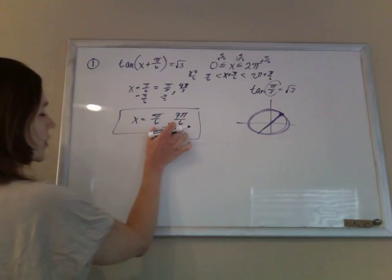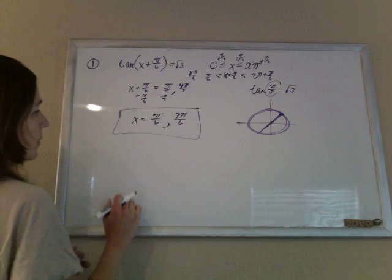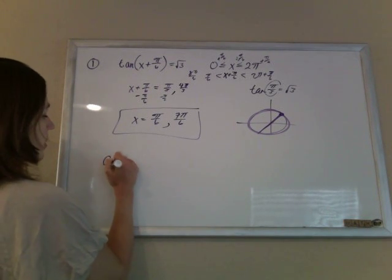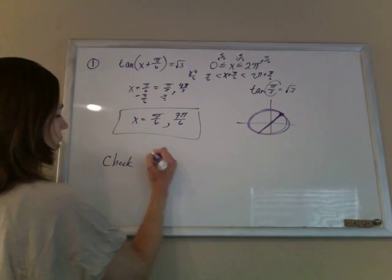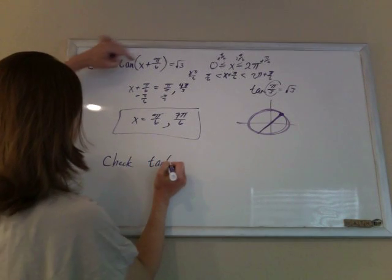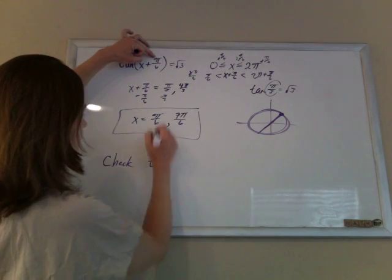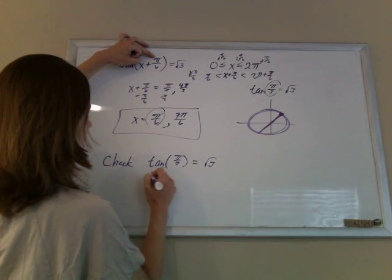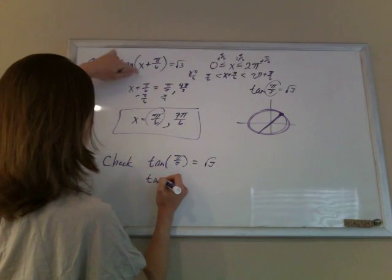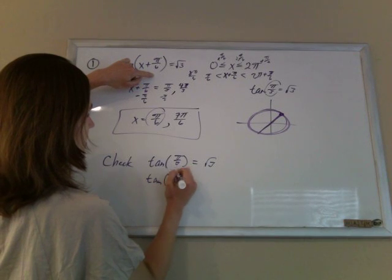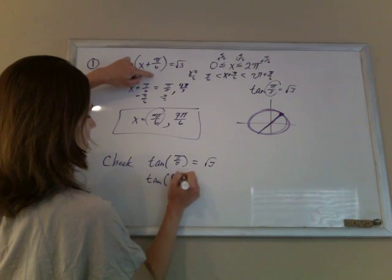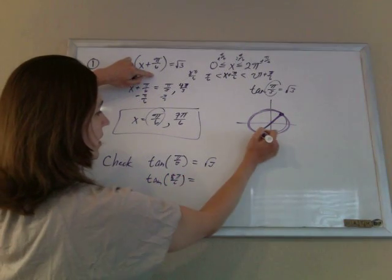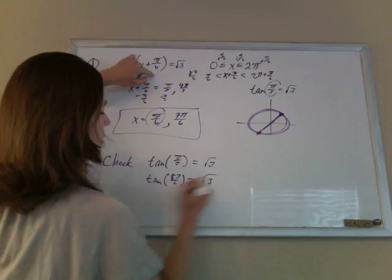So these are the two values of x that when you put that in there, it'll make that true. You can check them if you want, right? So the tangent of pi 6 plus pi 6 is a pi thirds, and that is indeed root 3. And then the tangent of 7 pi 6 plus pi 6 is 8 pi 6, which is 4 pi thirds. And the tangent down there is also a positive root 3.